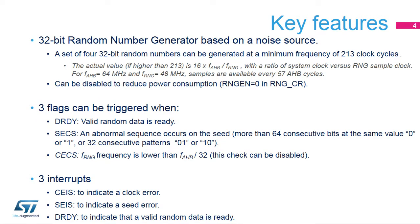The RNG peripheral is based on continuous analog noise that provides a random 32-bit value, which will be explained in detail later on. The RNG is able to generate four 32-bit random numbers at a minimum frequency of 213 system clock cycles.